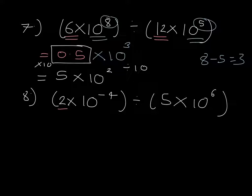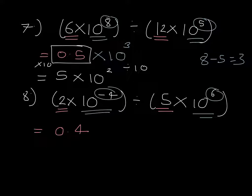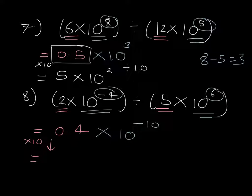Question 8: 2 divided by 5 gives us 0.4. Then we have 10 to the minus 4 divided by 10 to the power of 6 — subtracting the indices — giving us times 10 to the power of minus 10. We need to multiply the 0.4 side by 10, giving us 4.0 times 10 to the power, and here we divide by 10. We're making the powers more negative, so this becomes minus 11 in the power.